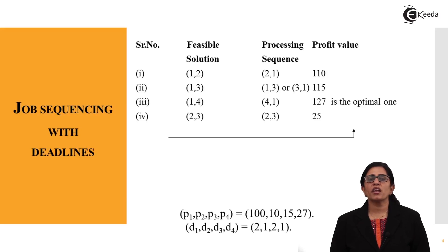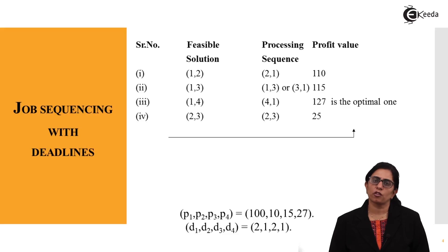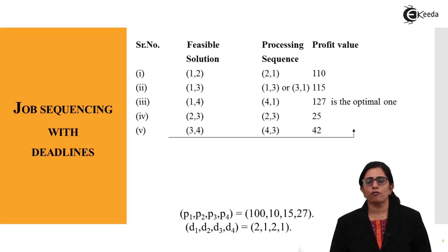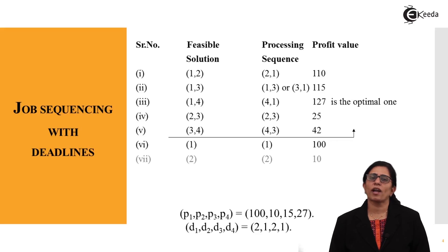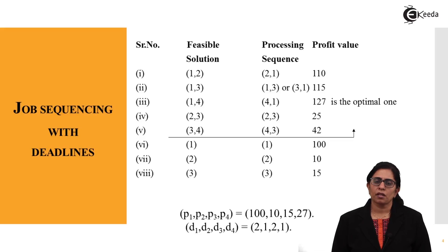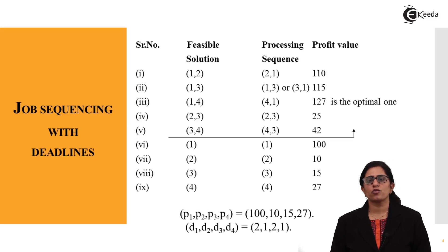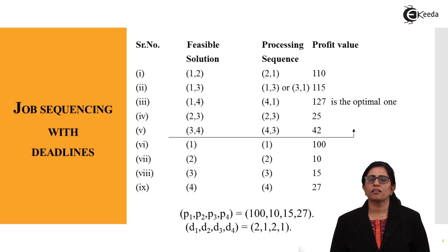The optimal solution is the one that gives maximum profit. Processes 3 and 4 combined give 42. For single processes: P1 gives 100, P2 gives 10, P3 gives 15, P4 gives 27. But the most optimal solution is processes 1 and 4 together, giving a maximum profit of 127.